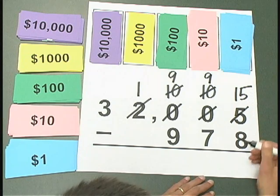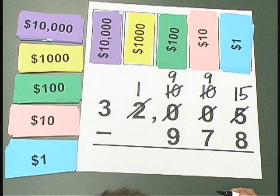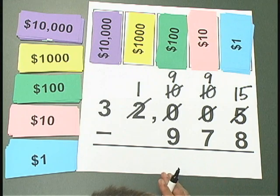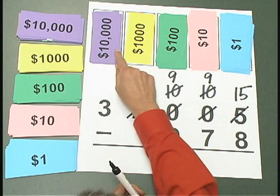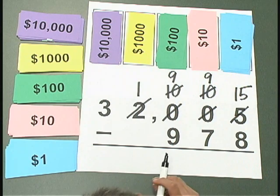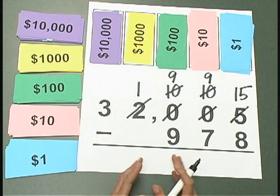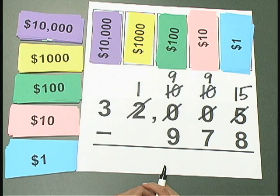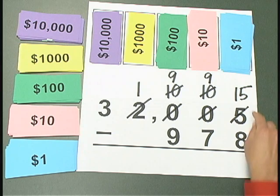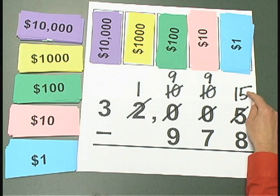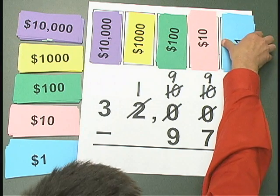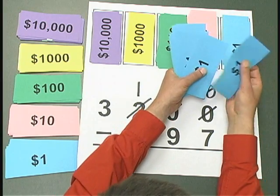I now have enough ones so that I can start my subtracting. But before we start, just think about how the amount of money here at the top is the same as the $32,005 we started with — we just made several even exchanges along the way. So now let's start the takeaway process: $15 take away $8. I need to take away 8 ones.